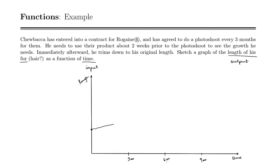Two weeks before each photoshoot he starts using Rogaine — I'm going to mark that in red, right around there, and there, and there. Immediately after his photoshoot he trims down to his original length. So his original length was right here, and he trims down at three, six, and nine months.